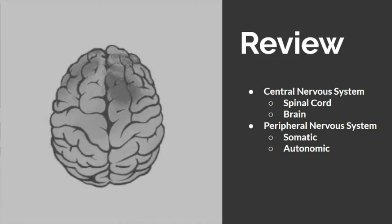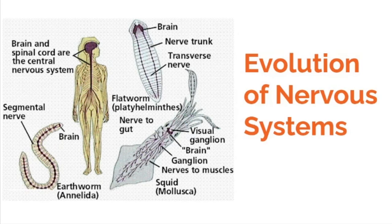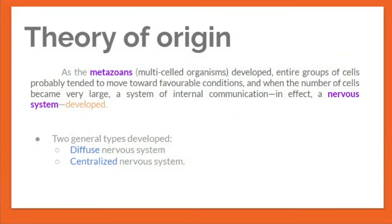Regarding the evolution of nervous systems: as metazoans — multi-celled organisms — developed, entire groups of cells tended to move toward favorable conditions. When the number of cells became very large, a system of internal communication — in effect, a nervous system — developed.